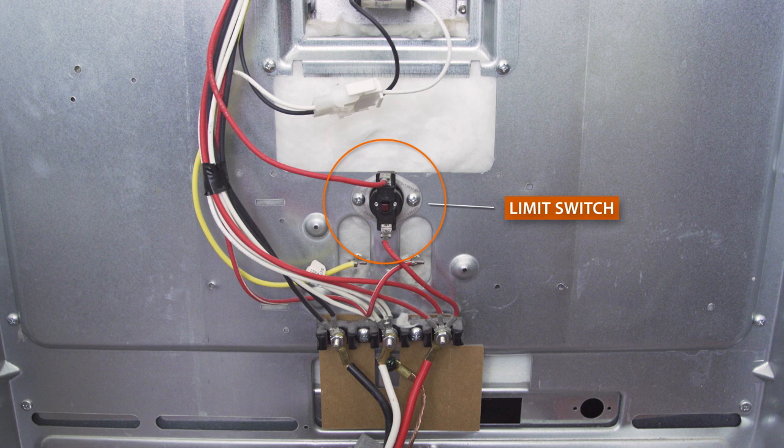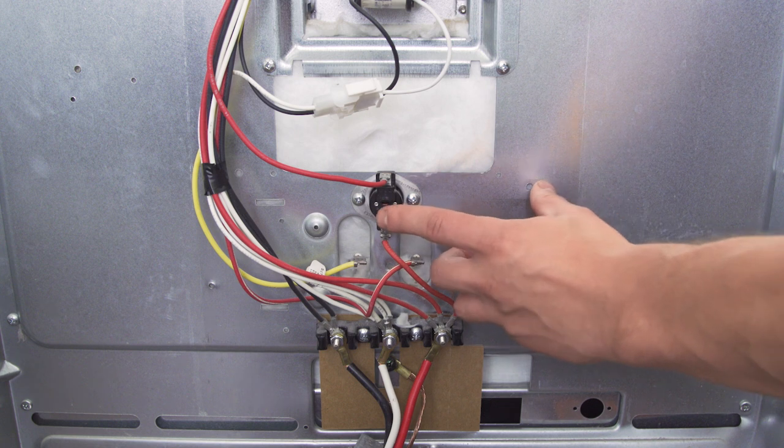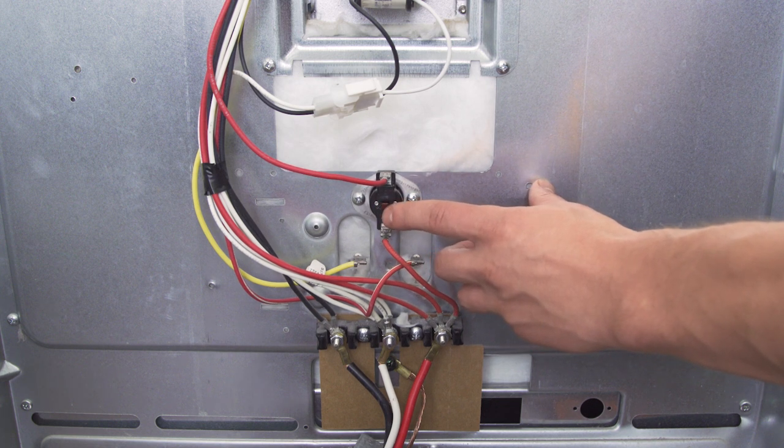The limit switch should be located near the bake or broil element terminals. If your switch has a reset button, then push the button to reset it.